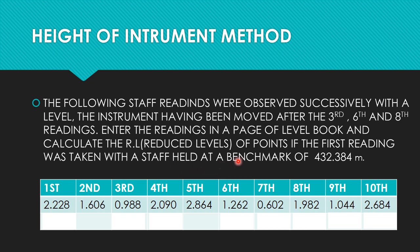The third, sixth, and eighth readings will be the last readings before shifting the instrument. Ten staff readings are given in total, which may be taken from several stations. The first reading from a station will be our back sight, and the last reading from that instrument position will be our foresight. Since the instrument is moved after the third, sixth, and eighth readings, those readings will be our foresights.